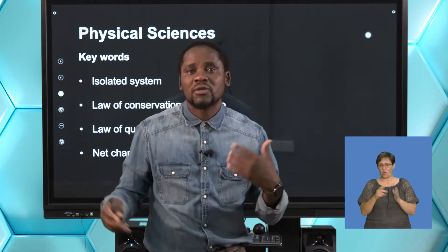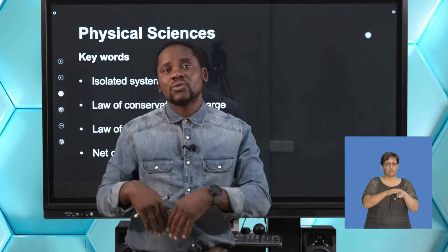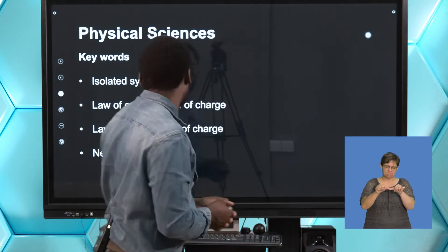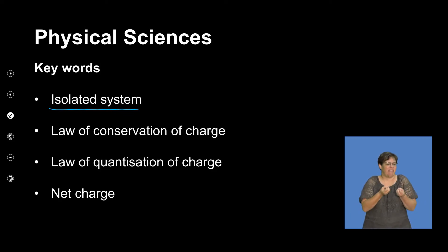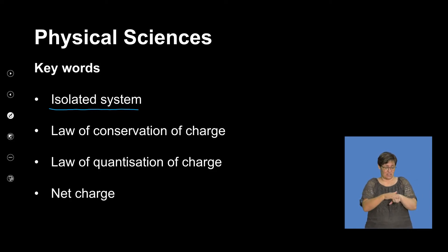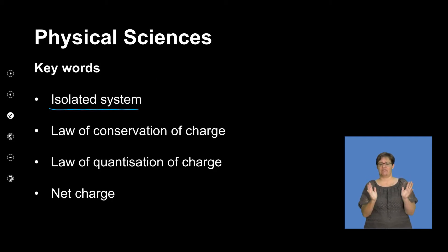What are some of the terms that are important for today's discussion on quantization and conservation of charge? The first term is isolated system. So if a system is isolated, what we have at the beginning is what we must retain at the end — there is no external interference. The only two materials that carry the charge are those insulators given in the scenario.